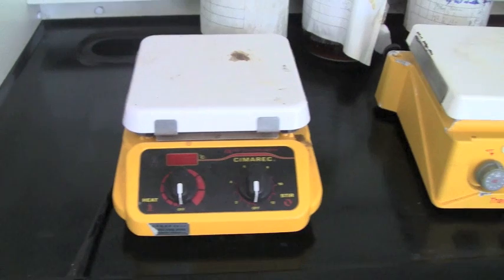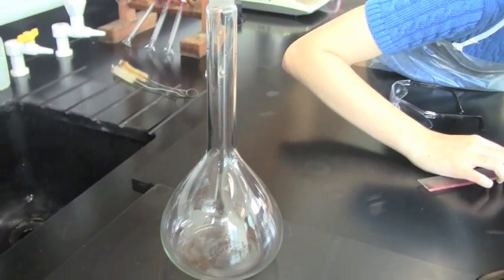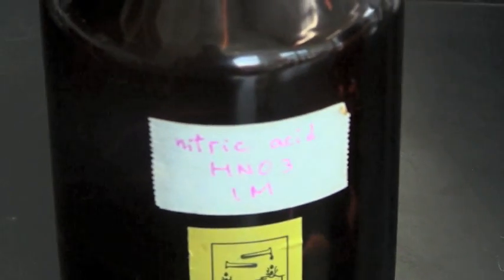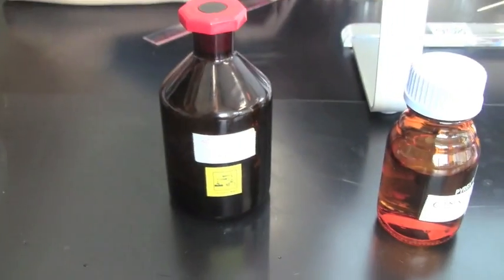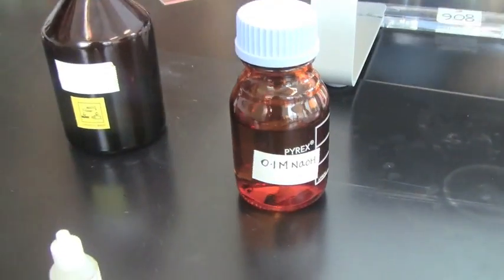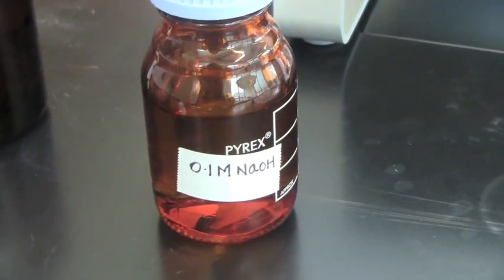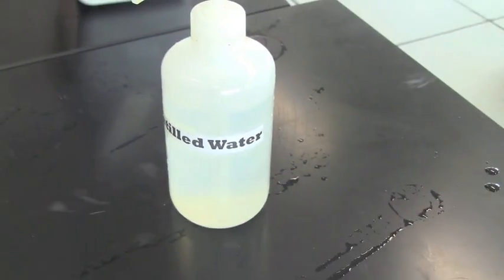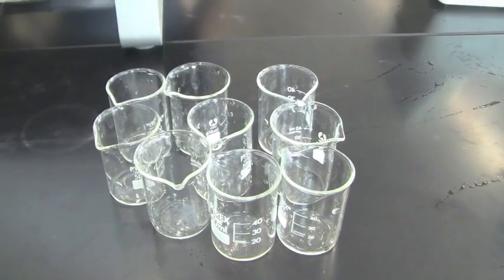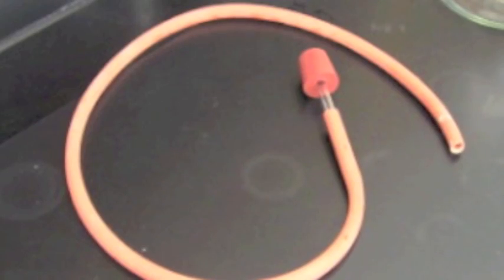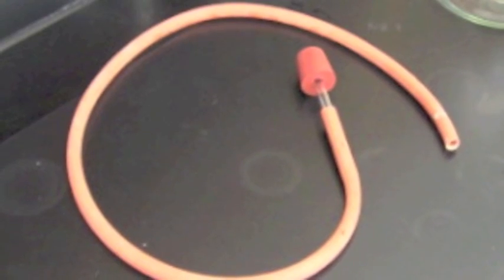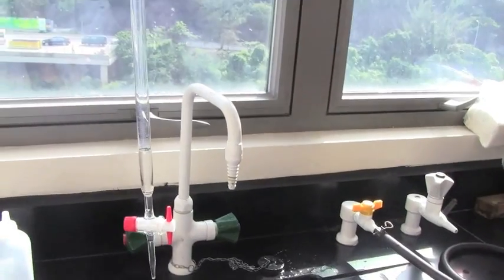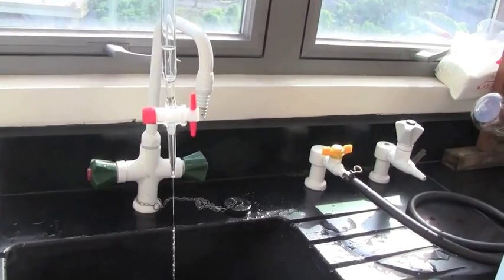The following items were used in this experiment: two hot plates, an Erlenmeyer flask, one molar nitric acid, 0.1 molar NaOH, iron fillings, distilled water, 40 ml beakers, rubber stopper with rubber tube, as well as titration equipments such as burette and dinovier.